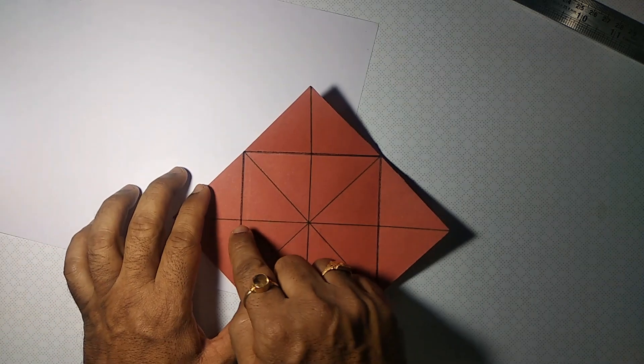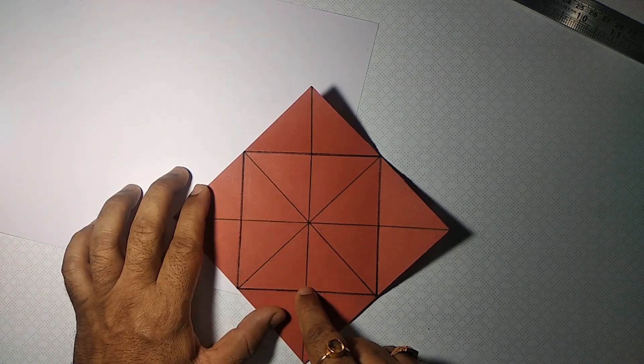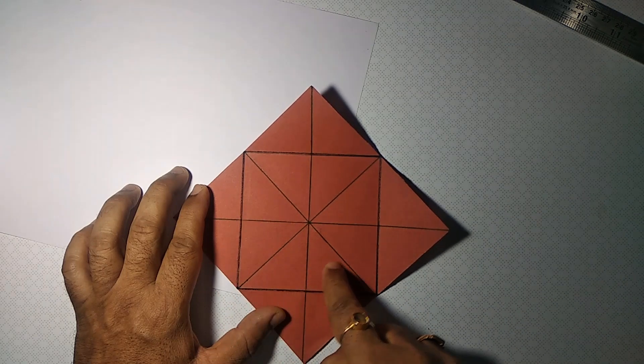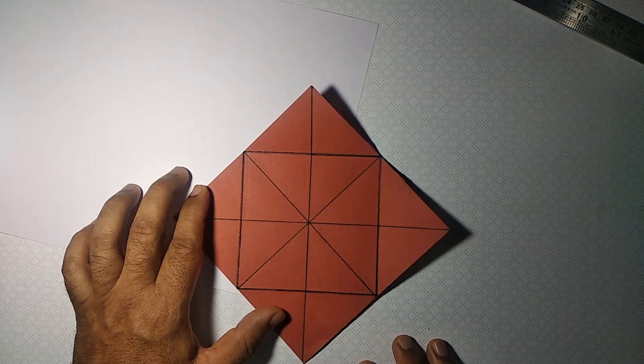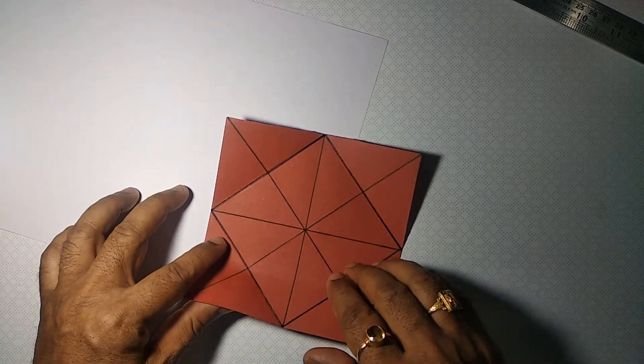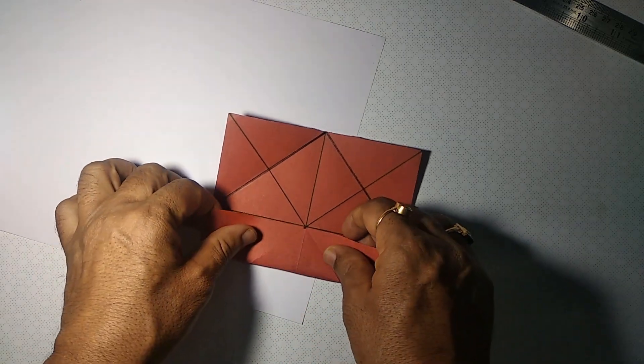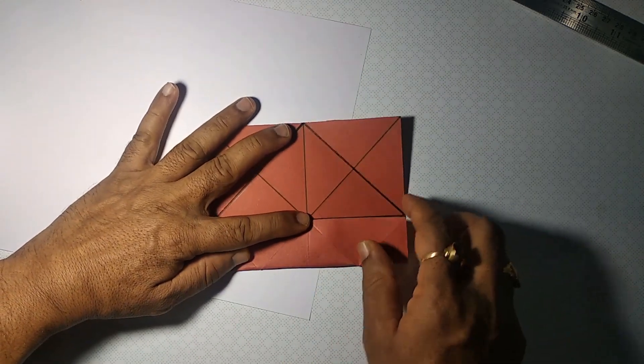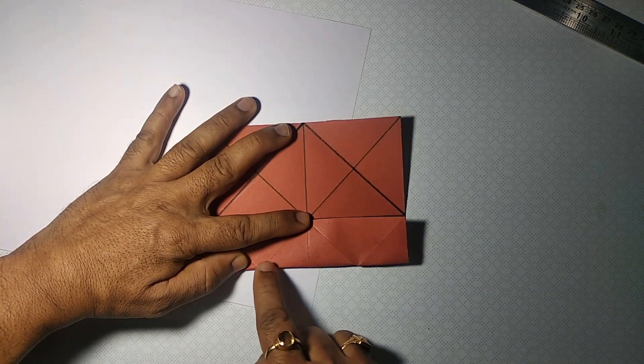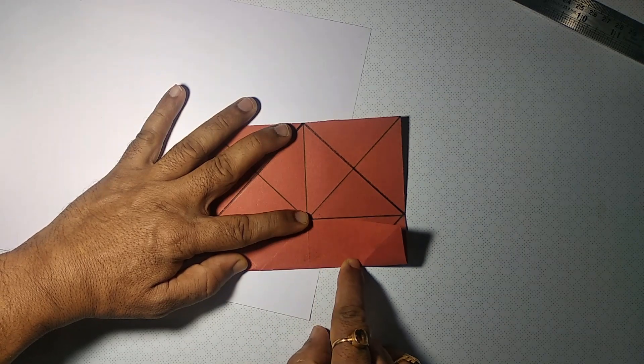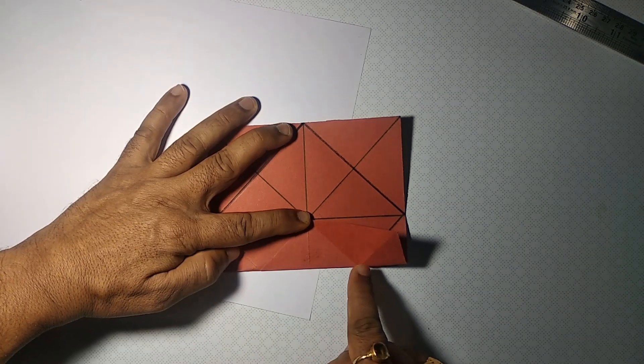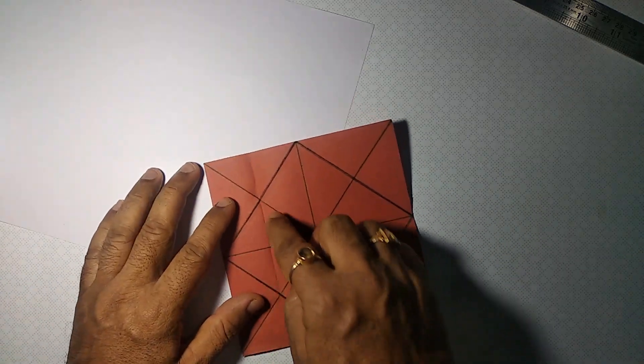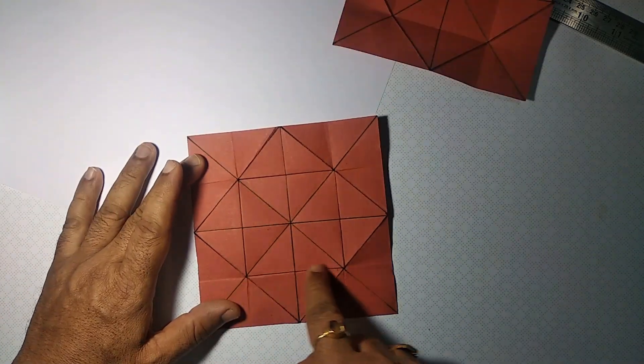Now, once again, identify the centers of the sides of the new square formed just now and make the creases as shown. Let the creases be inside that small squares. Make it on all the four sides to form the new square. It looks like this.